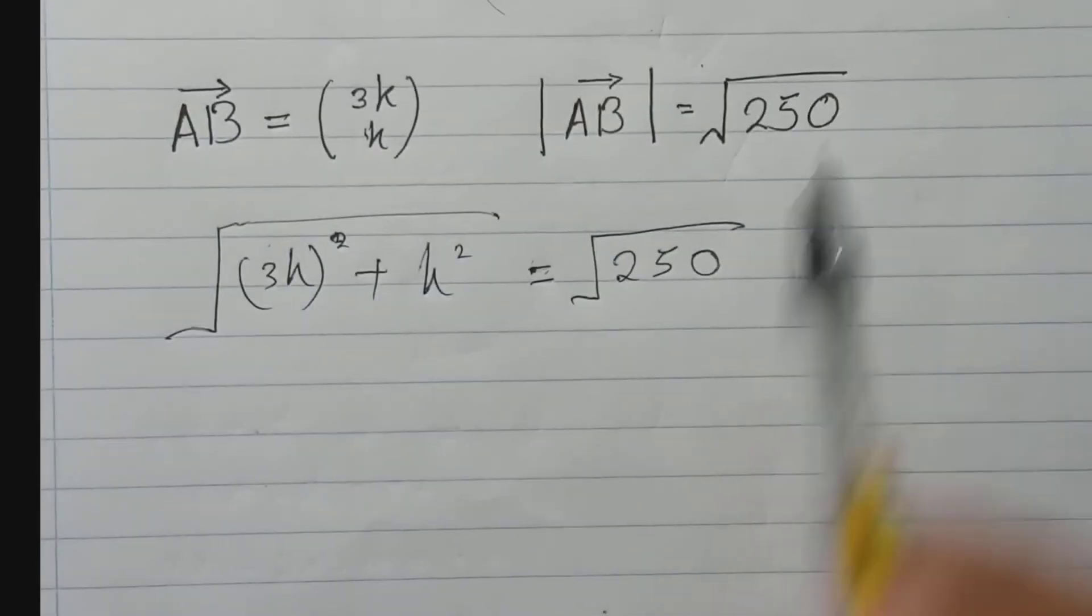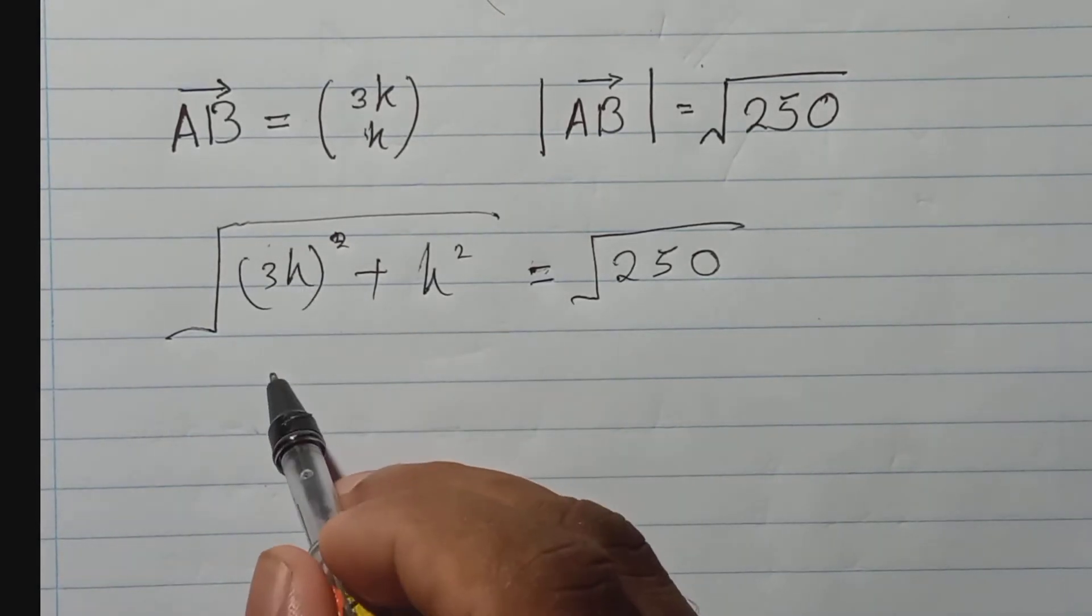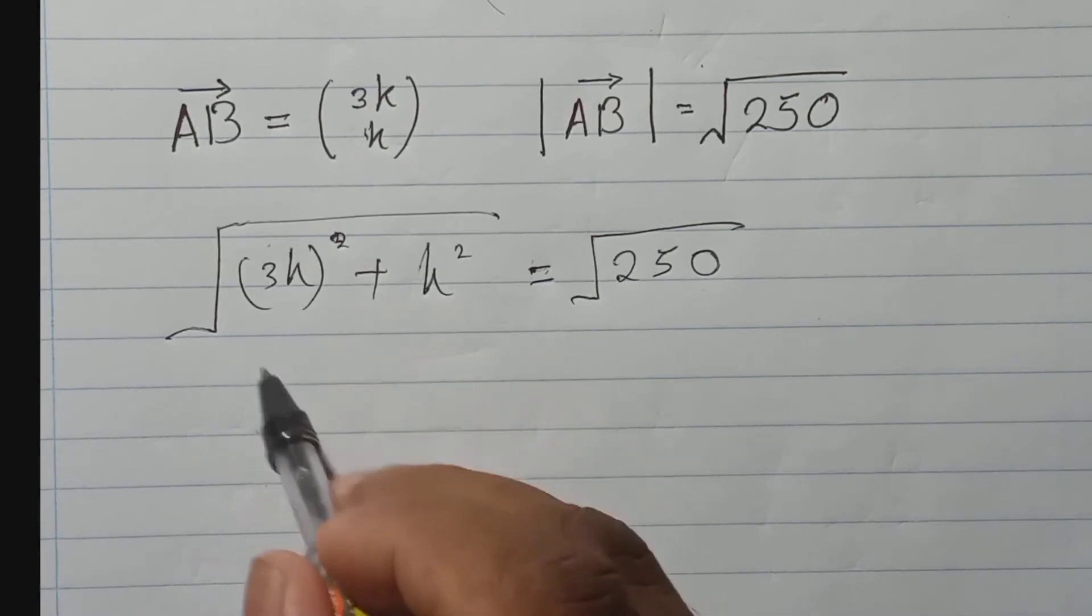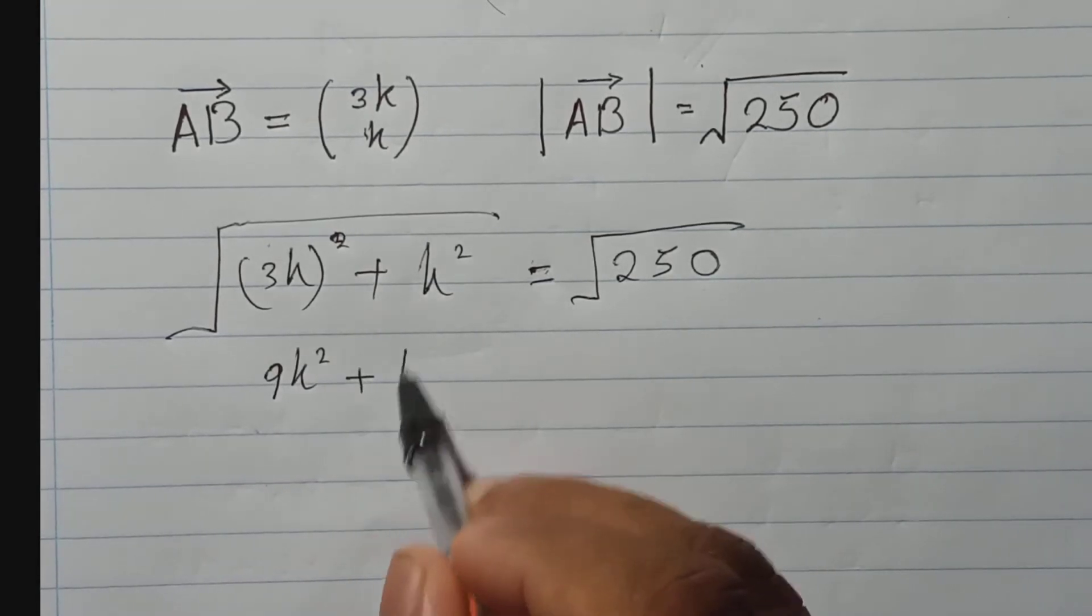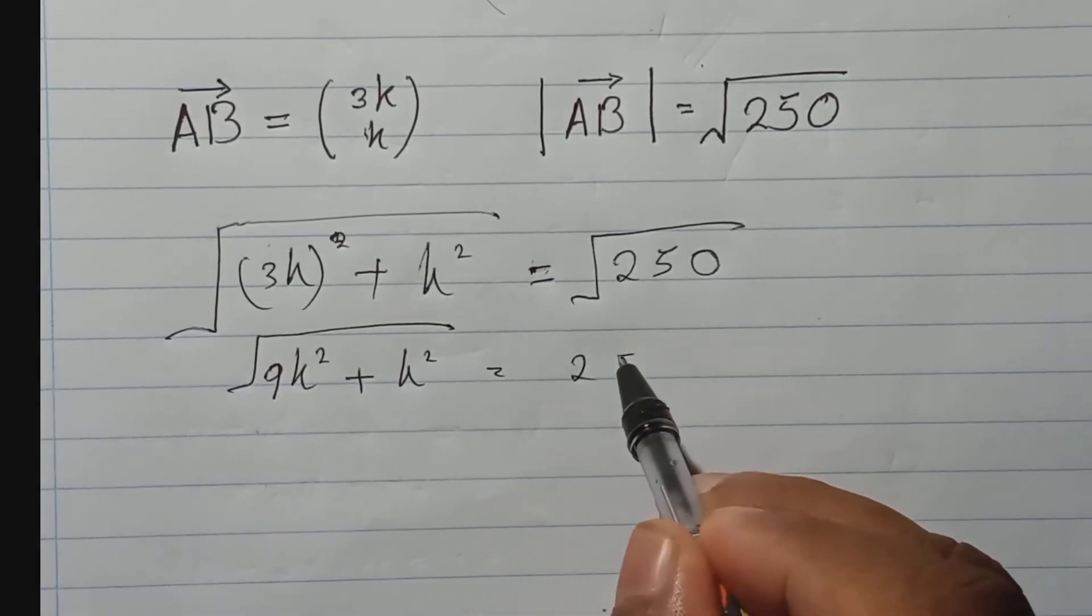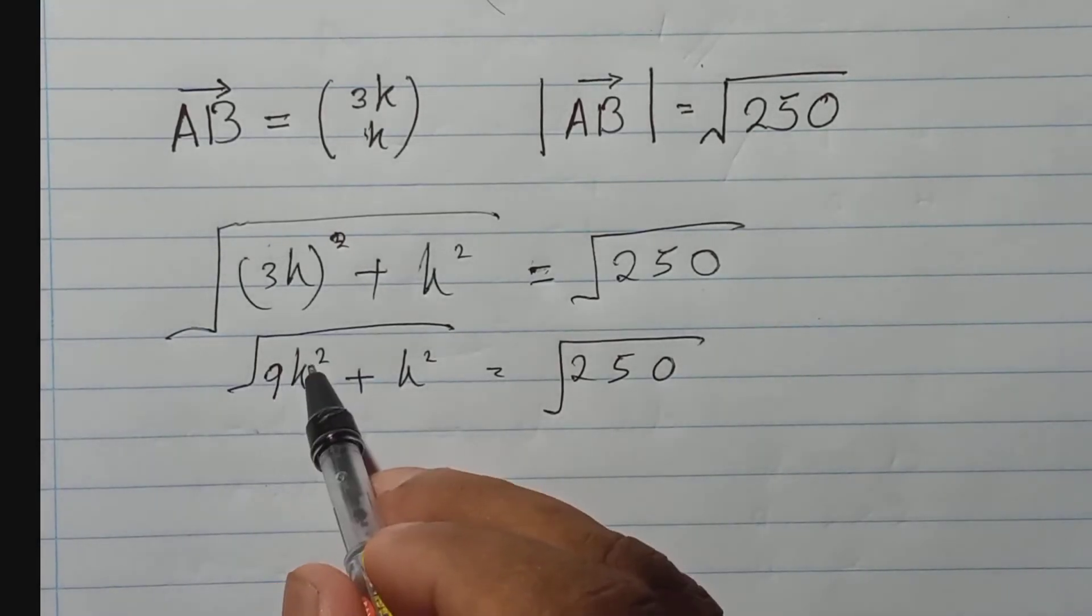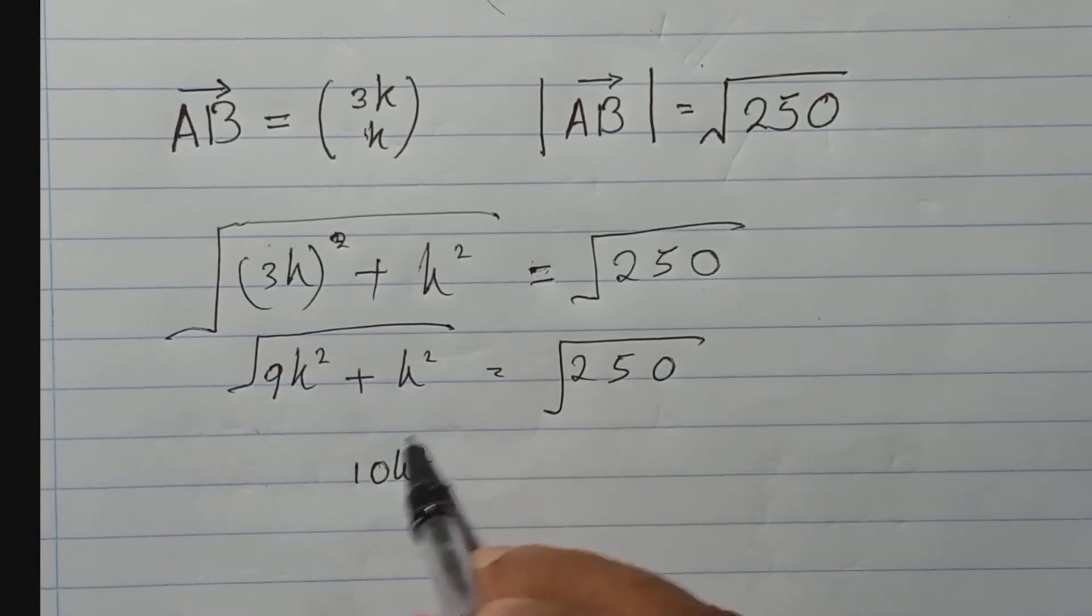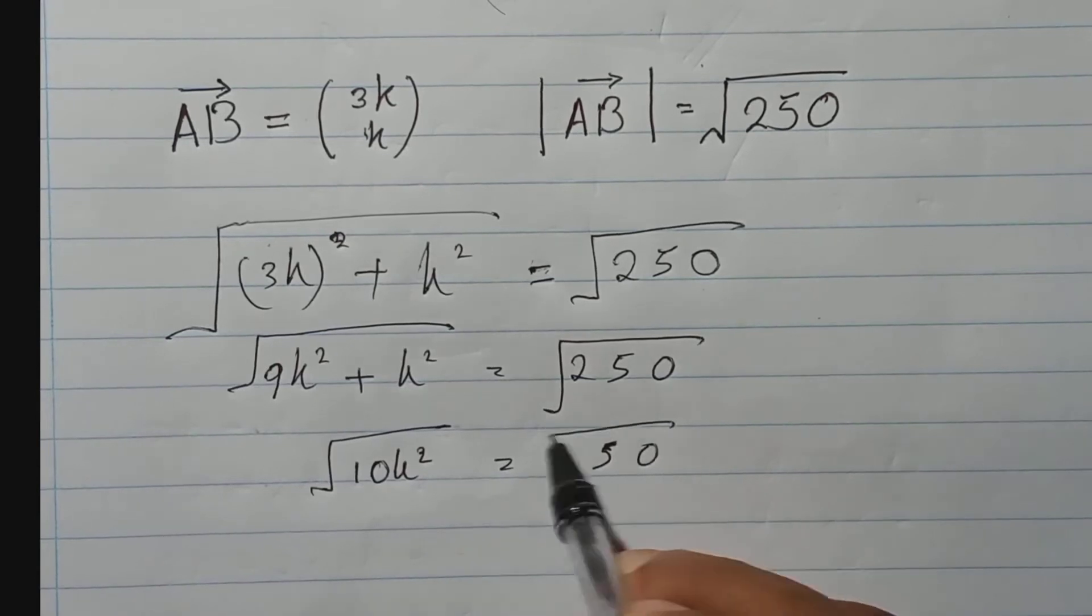So now let me try to simplify this. Here will be 3 square mean 9k square, you have just k square and here k square already, and here 250. And here will be 9k square plus 1k square mean it is 10k square, and 250.